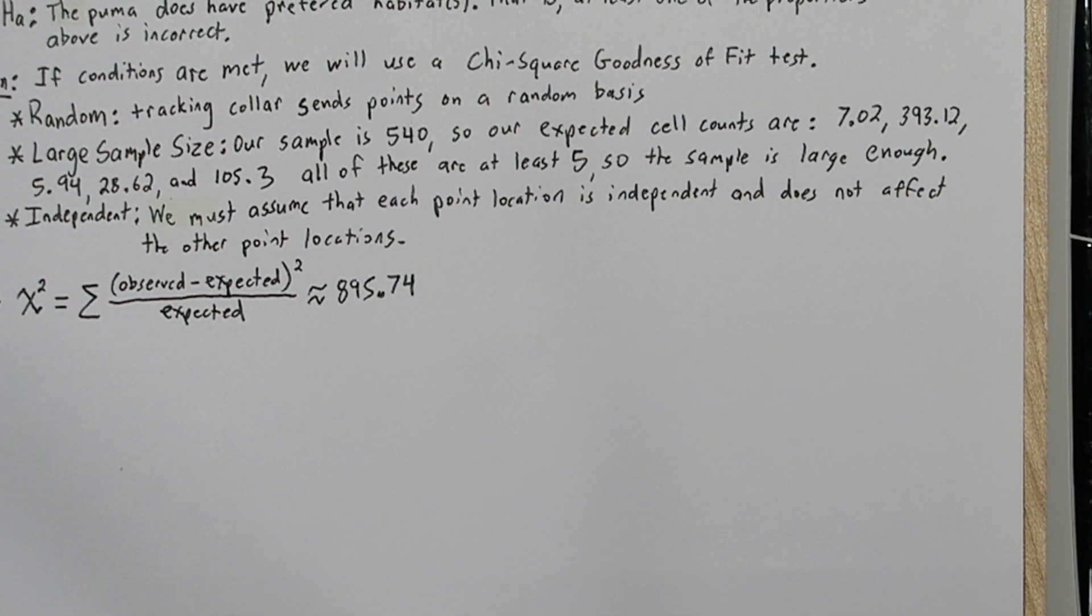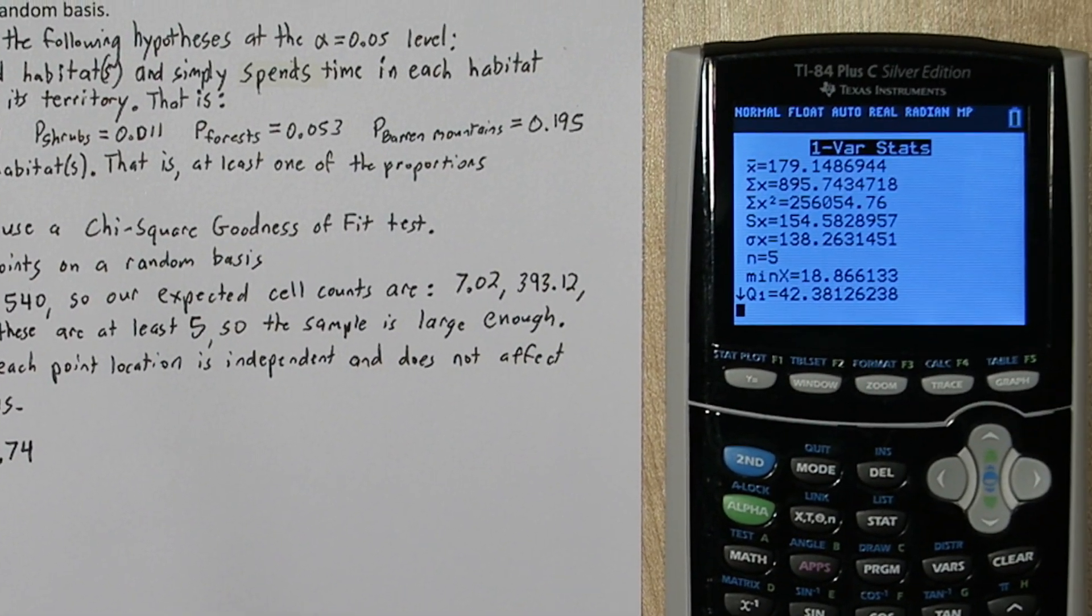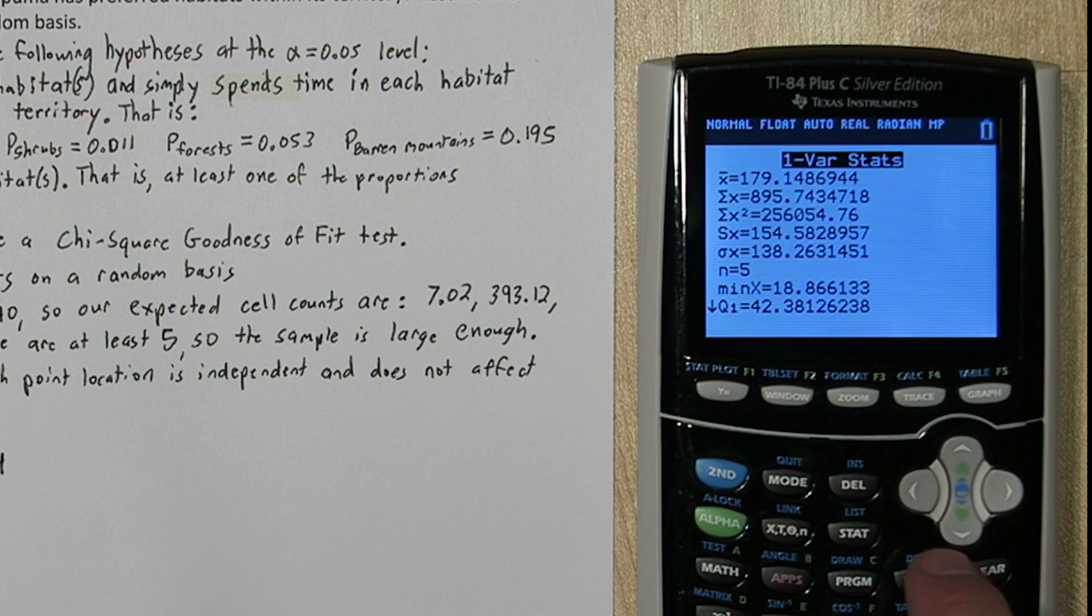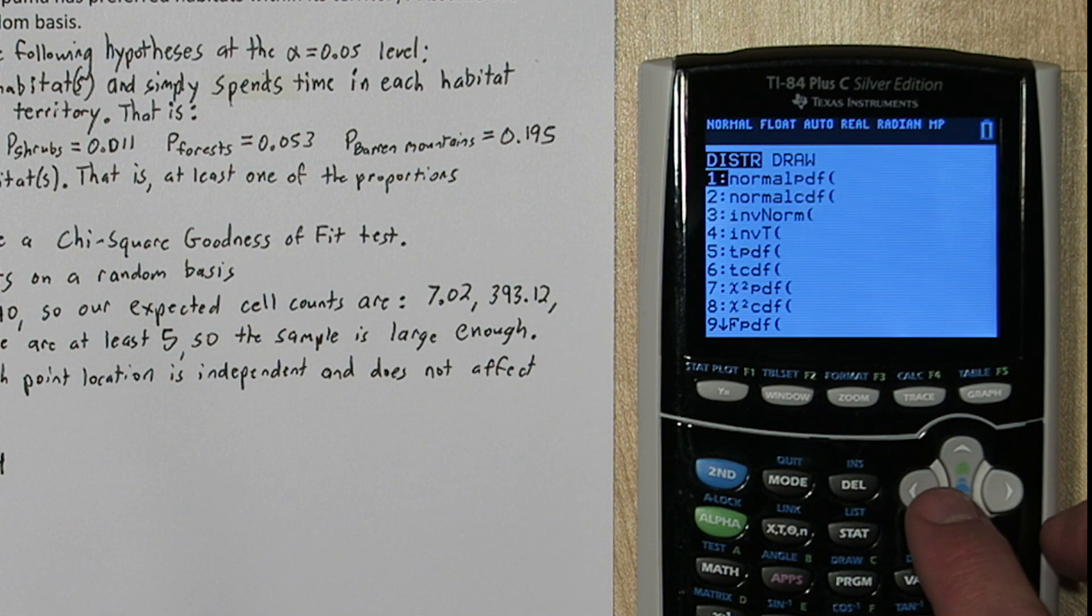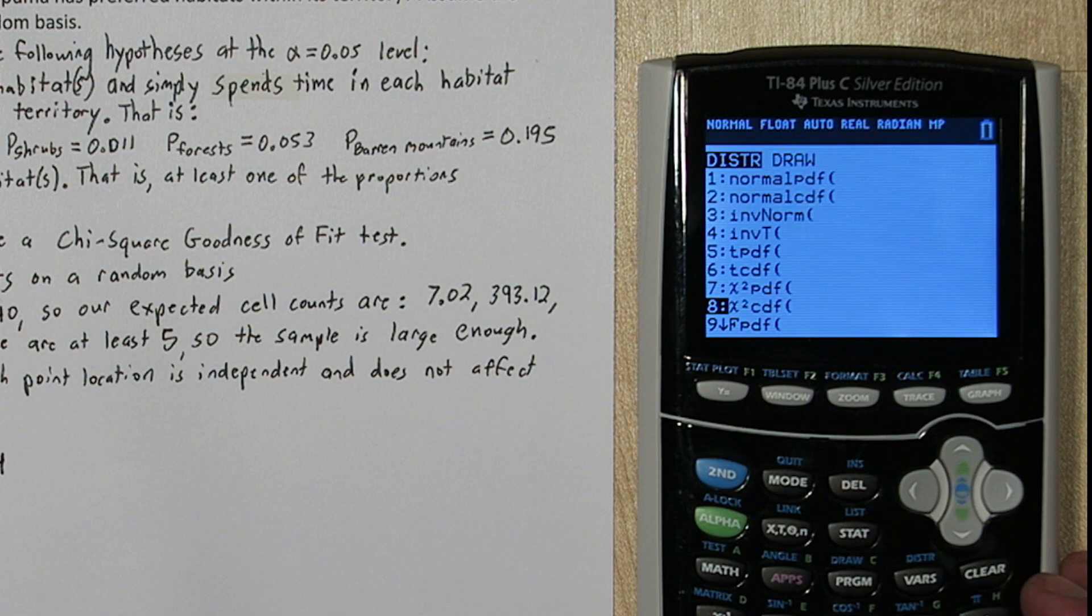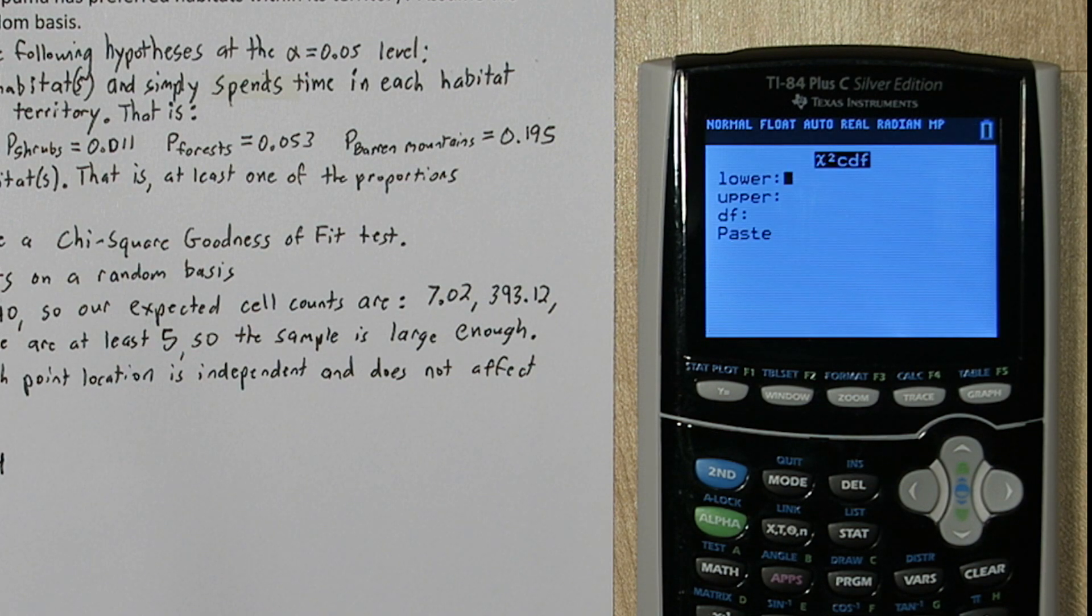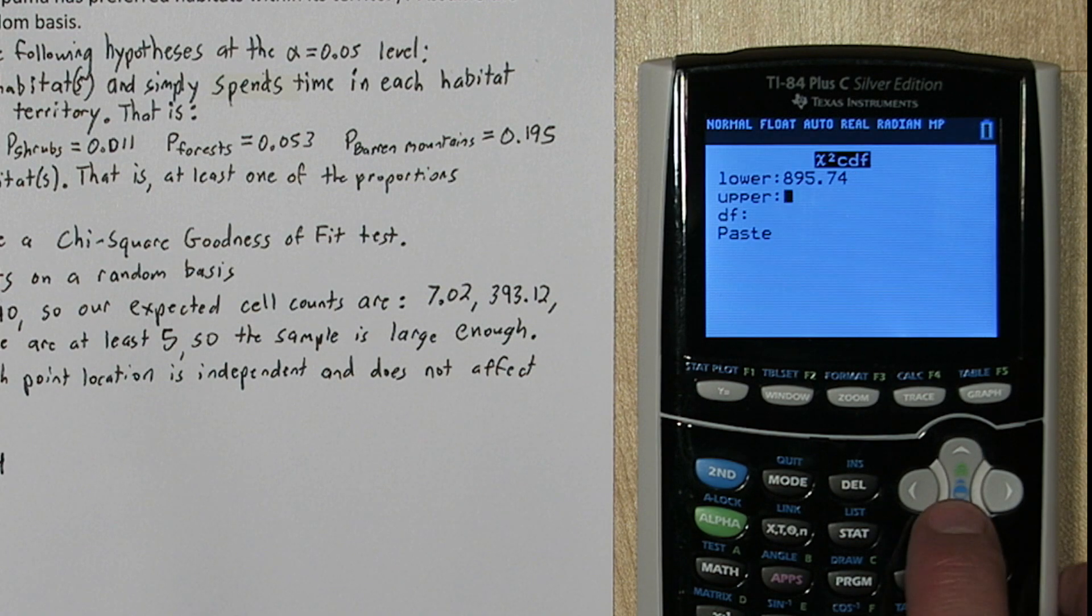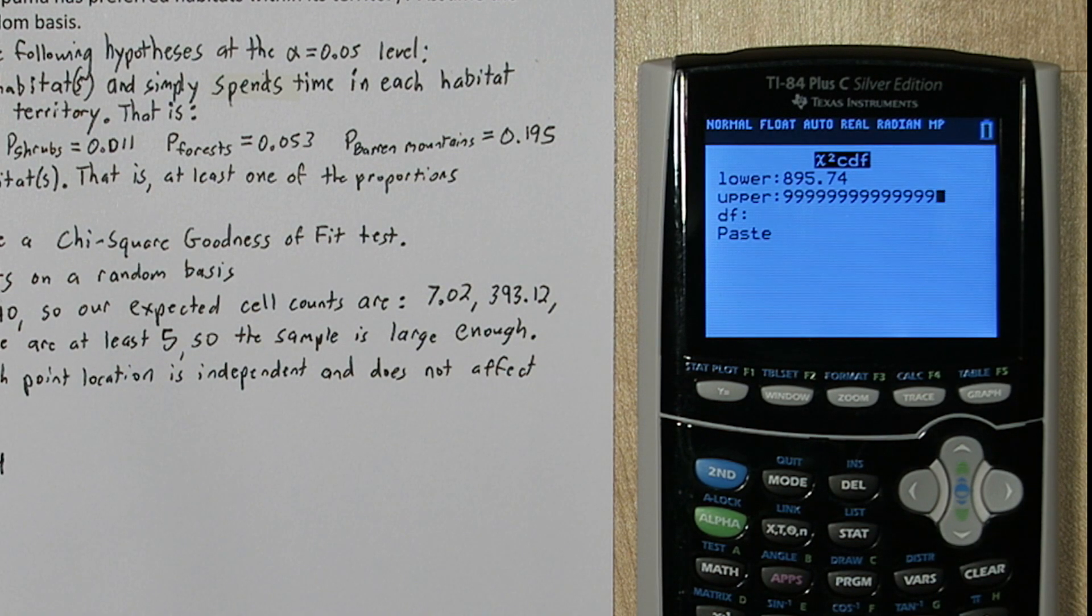Now I need to figure out the p-value associated with that. So if I press second, vars, to get to the distribution menu, down here you'll see chi-cdf. My lower limit is going to be 895.74, my upper limit is just going to be a really large number.